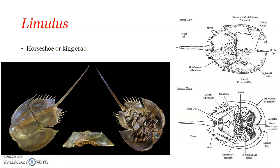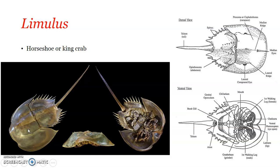The body consists of an anterior prosoma and posterior opisthosoma. The prosoma is convex above with sloping sides and bears three longitudinal ridges — one median and two lateral. A pair of simple median eyes and a pair of lateral compound eyes are placed on the dorsal surface of the prosoma. The prosoma bears six pairs of appendages around the mouth.